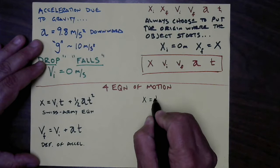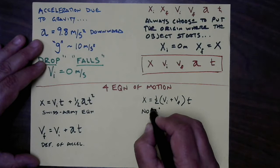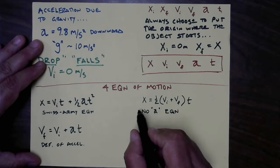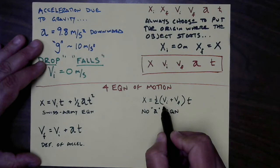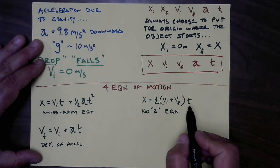Two more equations. The third is: x equals one-half times (vi + vf) times t. I call this the 'no-a equation' — or sometimes the 'Canadian equation' — no 'a,' or Noah. This says your final position equals your average velocity times time. The average is the arithmetic mean of the two velocities, which only works when velocity is changing uniformly — that is, under constant acceleration.